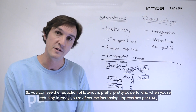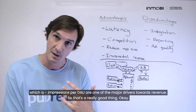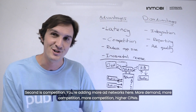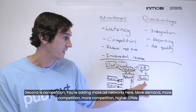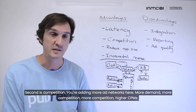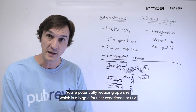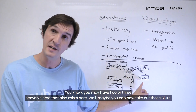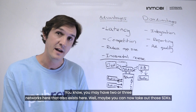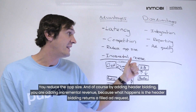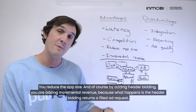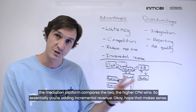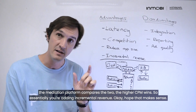So you can see the reduction of latency is pretty powerful. And when you're reducing latency, you're increasing impressions per DAU, which is one of the major drivers towards revenue. Second is competition — you're adding more ad networks, more demand, more competition, higher CPM. You're potentially reducing app size, which is a biggie for user experience and LTV. You may have two or three networks that also exist elsewhere, and maybe you can now take out those SDKs and reduce the app size. And by adding header bidding, you are adding incremental revenue, because the header bidding returns a filled ad request, the mediation platform compares the two, and the higher CPM wins.